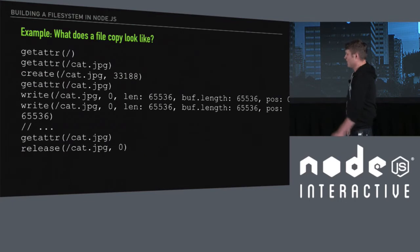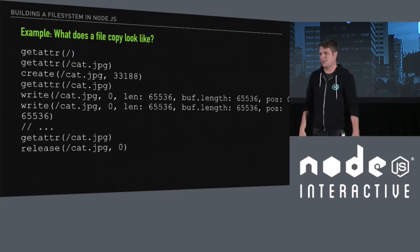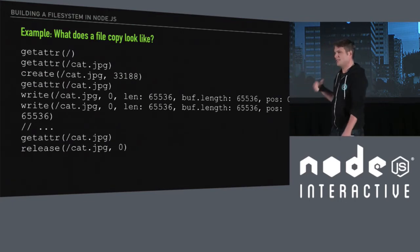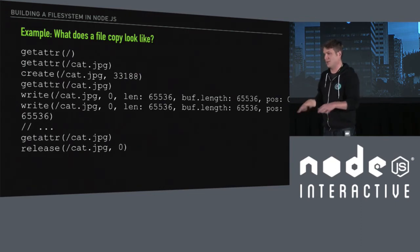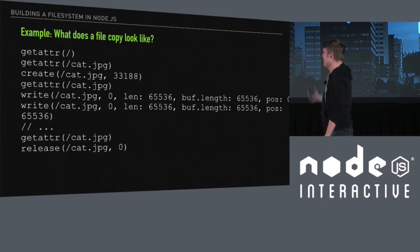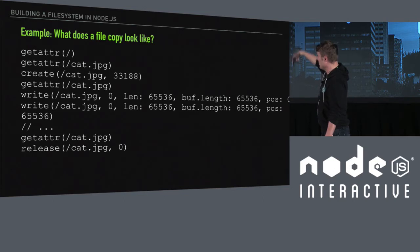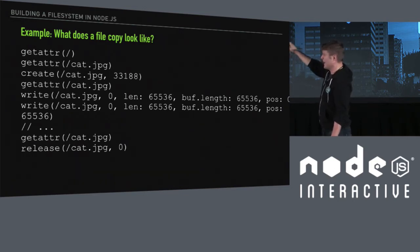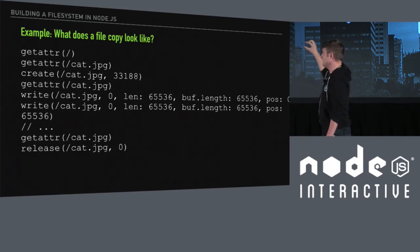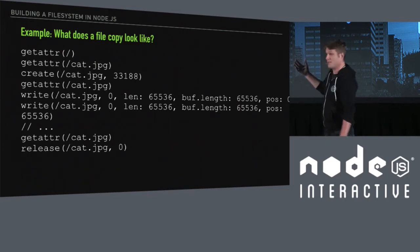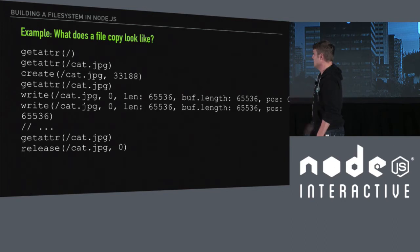It's pretty interesting when you're getting started and you just console log all of these calls as you're interacting with this directory in the shell. This is me copying a cat.jpg file into my mounted Fuse file system, and you can actually see what the copy command is doing. It's getting the attributes for the root directory of the mounted file system, getting it for cat.jpg which doesn't exist, so it creates it, gets the attributes again, and begins a buffered write. So there are several write calls, that wraps up, it gets the attributes, and then it releases the file descriptor.